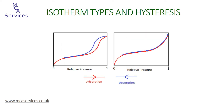Here we have two isotherms. The one on the left shows open hysteresis between the adsorption and desorption branches, whereas the one on the right shows the desorption branch following the adsorption branch, so no hysteresis. In our other gas sorption isotherm presentations we looked at the various adsorption isotherm types and types of desorption hysteresis, briefly explaining these phenomena and their significance when interpreting isotherms and making links to the classification of pore structure of the sample.